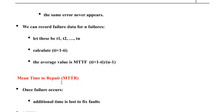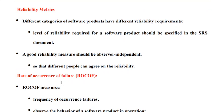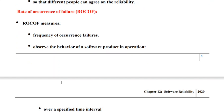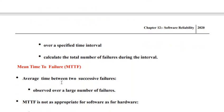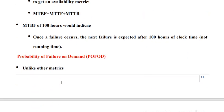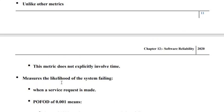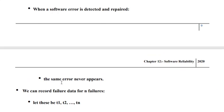So these are some of the important reliability matrices. In today's class, we learned about the importance of reliability matrices and why it is important to have an observer-independent evaluation of reliability measures. We learned about rate of occurrence of failure, mean time to failure, mean time to repair, mean time between failure, probability of failure on demand, and availability.